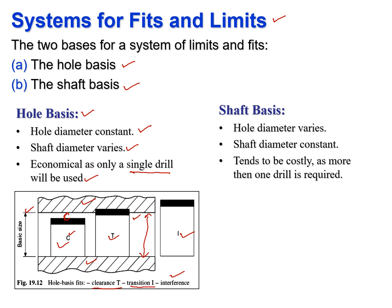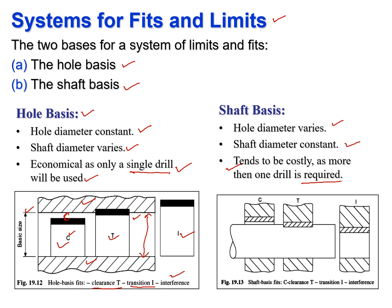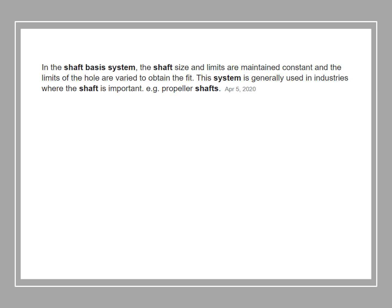In the shaft basis system, the hole diameter will vary and the shaft diameter is constant. We assign various sizes to the hole to fit them together. This tends to be costly as more than one drill is required. As you can see, the shaft diameter is constant and we vary the hole diameter for the clearance, transition and interference fits. The shaft size and limits are maintained constant and the hole limits are varied. This system is generally used in industry where the shaft is important.